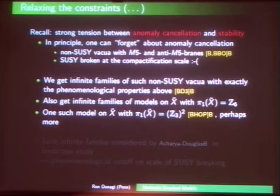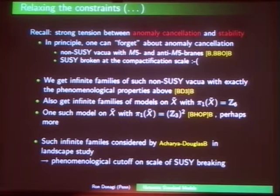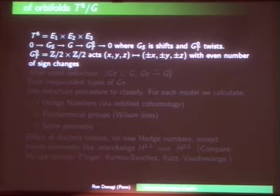There's a very strong tension between inequalities from anomaly cancellation and stability — they pull in exactly opposite directions. If you drop either one it's very easy to satisfy, but getting both to work simultaneously seems very delicate. Work in progress concerns the Gross manifold with fundamental group Z8-squared. Also, Vincent and I did an extensive analysis of Z6 models and were unable to find any bundles satisfying all the properties — that's what made us think maybe there is something special about that first example.